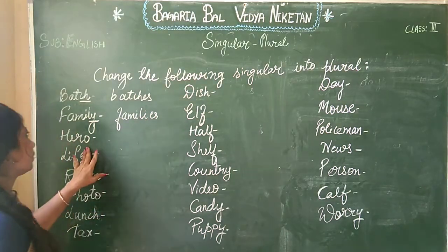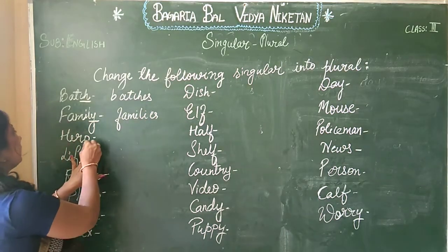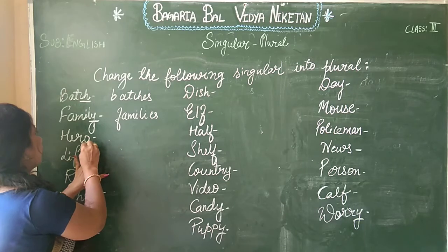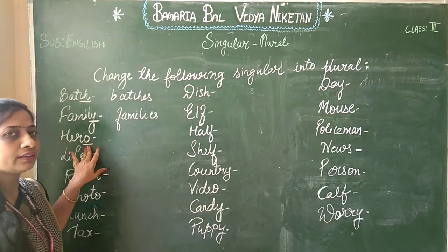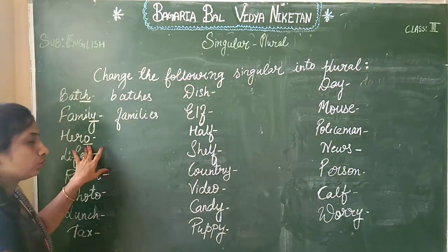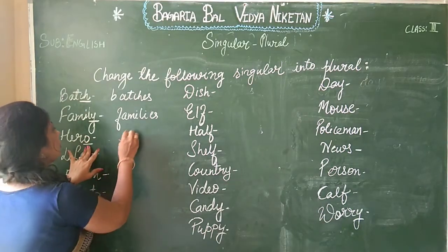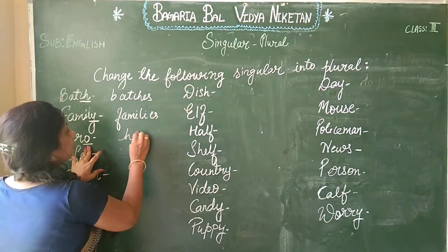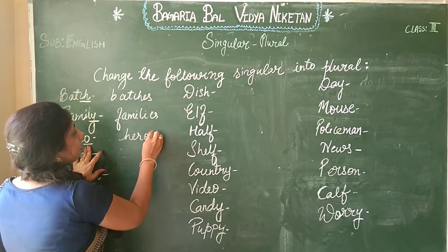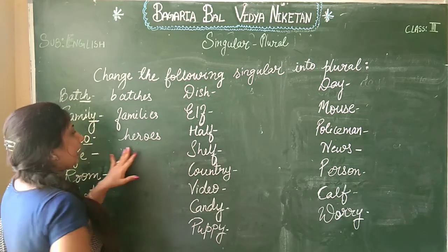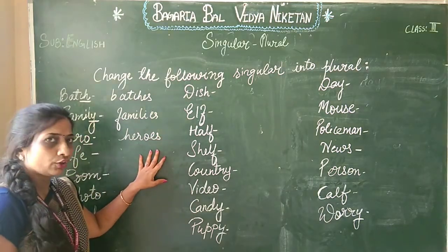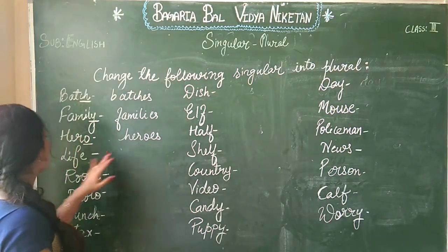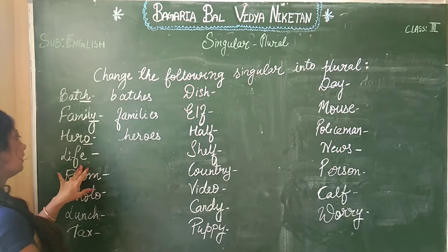Next one: 'hero'. What is at the end? O. So the spelling will be H-E-R-O-E-S, 'heroes'.